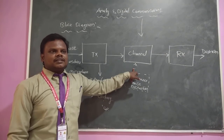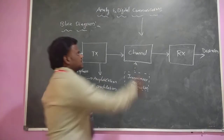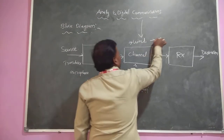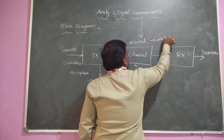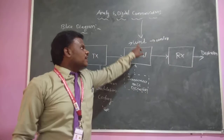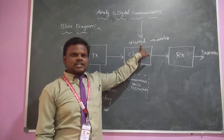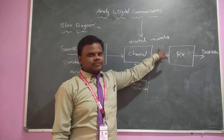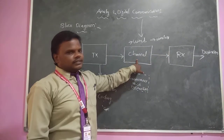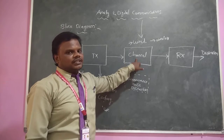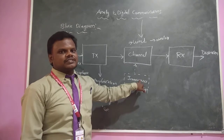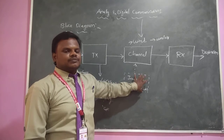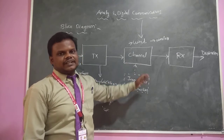The channel may be of two types — either wired or wireless. An example of wired communication is telephone communication. An example of wireless communication is mobile communication, which we are using. In the channel, depending on the channel, there may be chances of interference, distortions, and noise. We need to avoid these things by using different techniques.